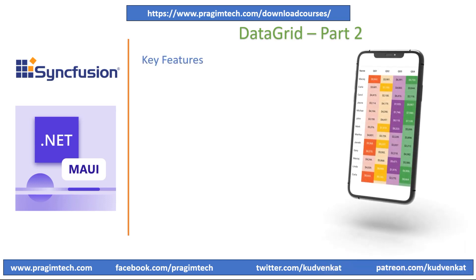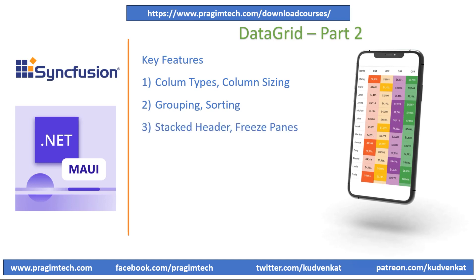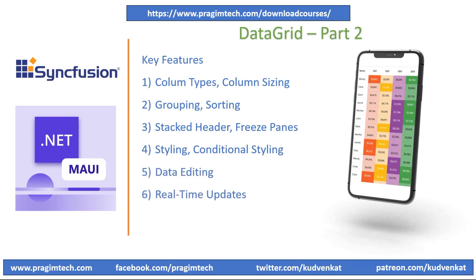In this session, we will focus on defining custom column types and sizing, allowing for highly customizable and visually appealing layouts. We will also focus on grouping of items, allowing users to organize and navigate content more efficiently. We will learn how to sort items in data grid — note that filtering was already covered in the previous session. We will look into stacked headers, freeze panes, extensive styling and conditional styling of rows and columns. If time permits, we will cover data editing, real-time updates and exporting of data. Let's now switch to the coding session and get going.